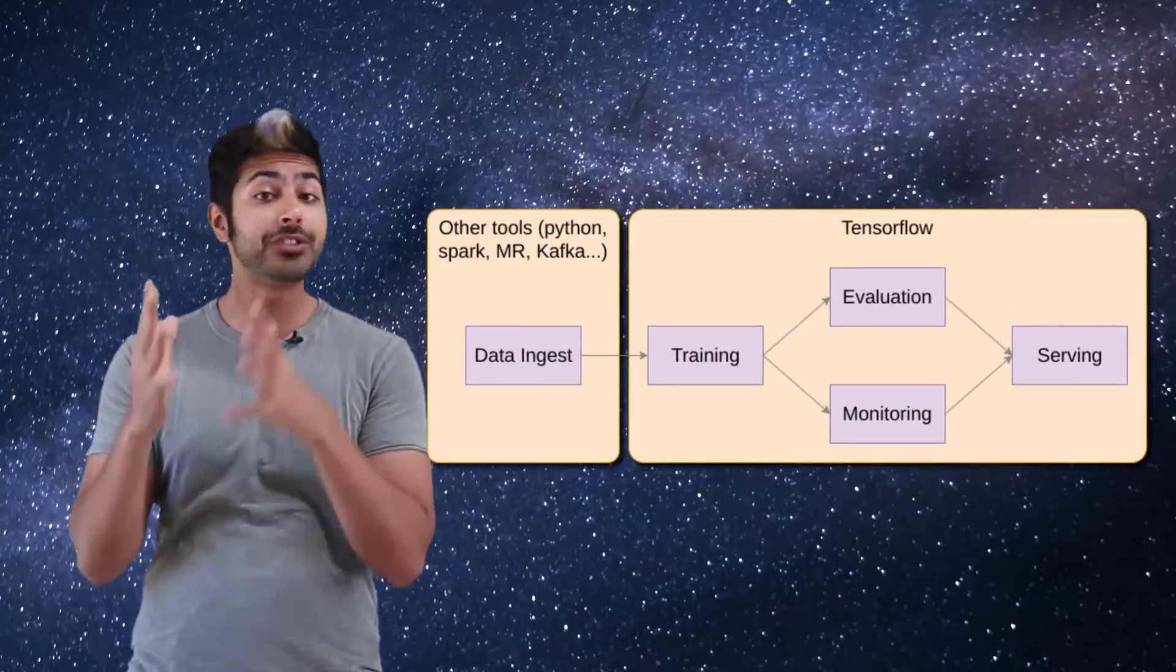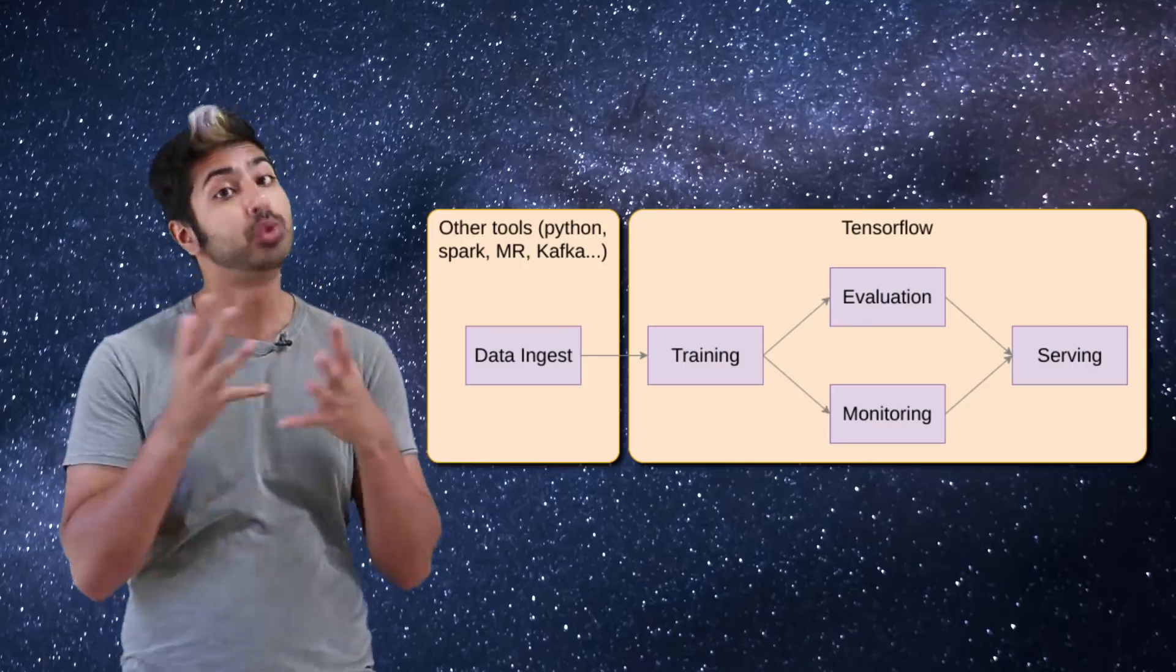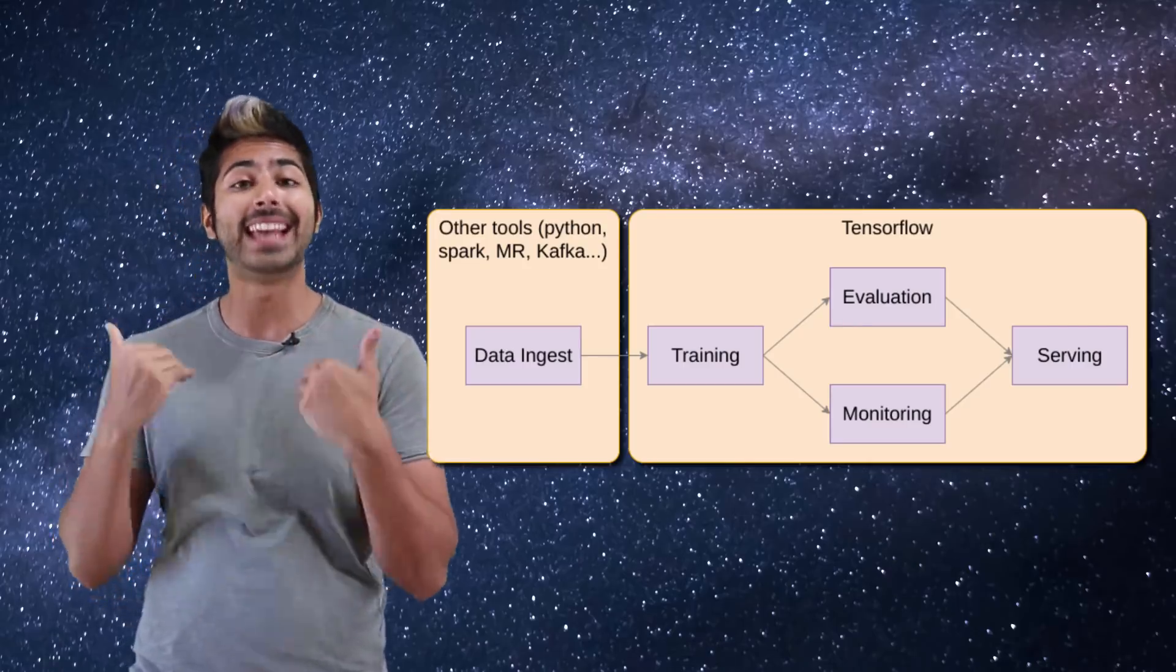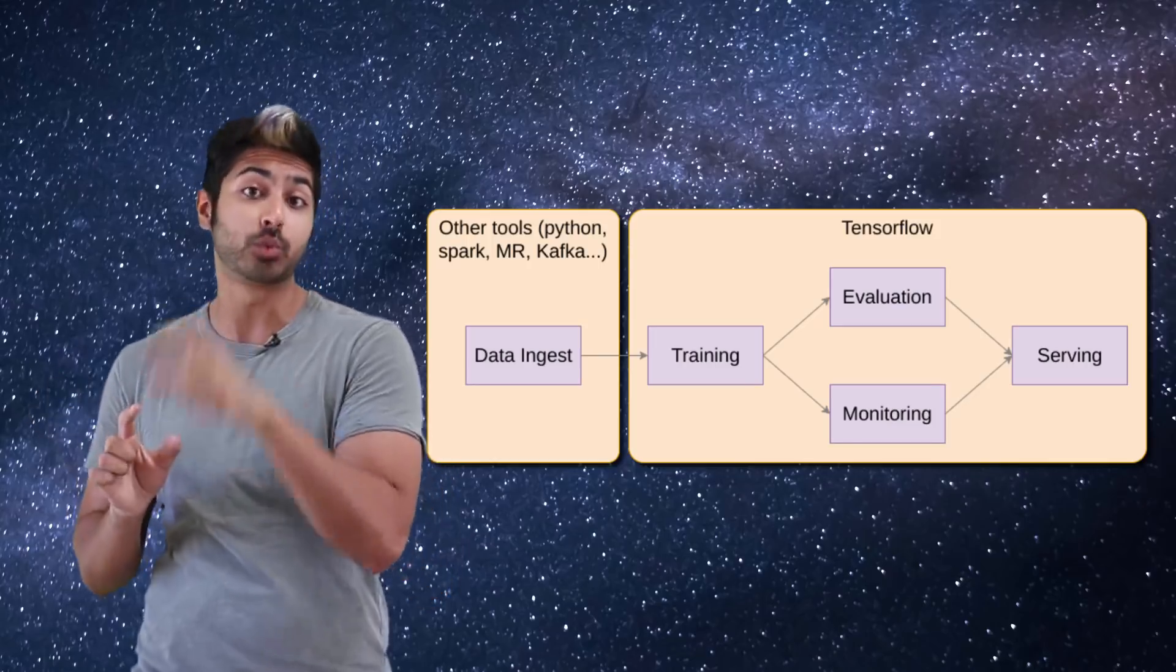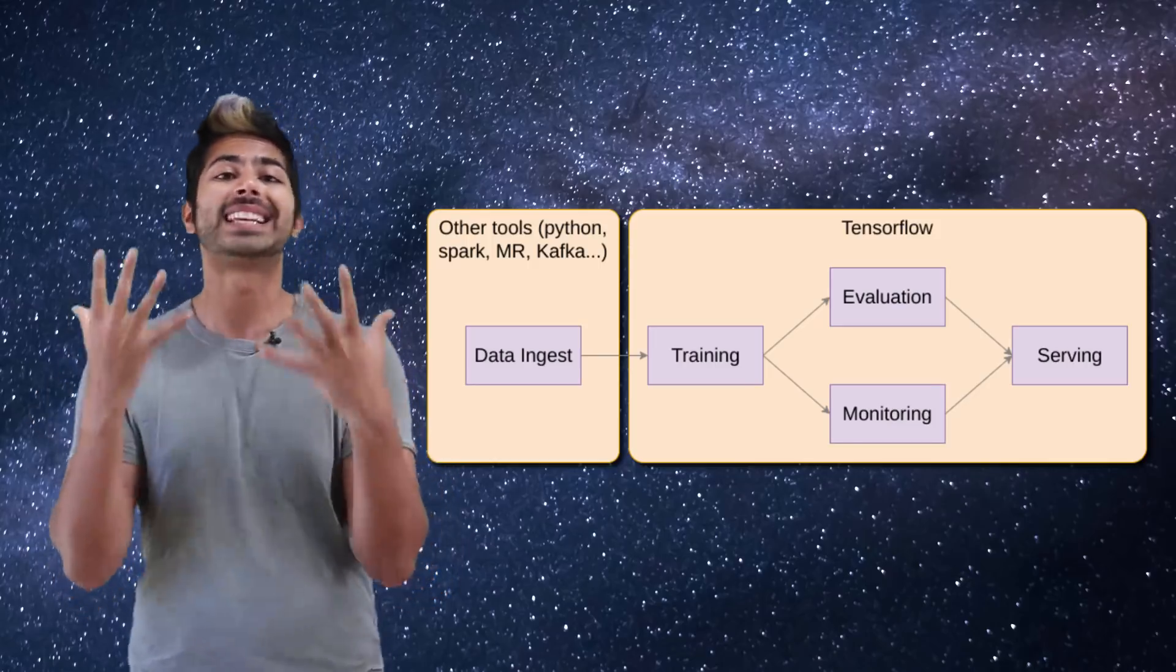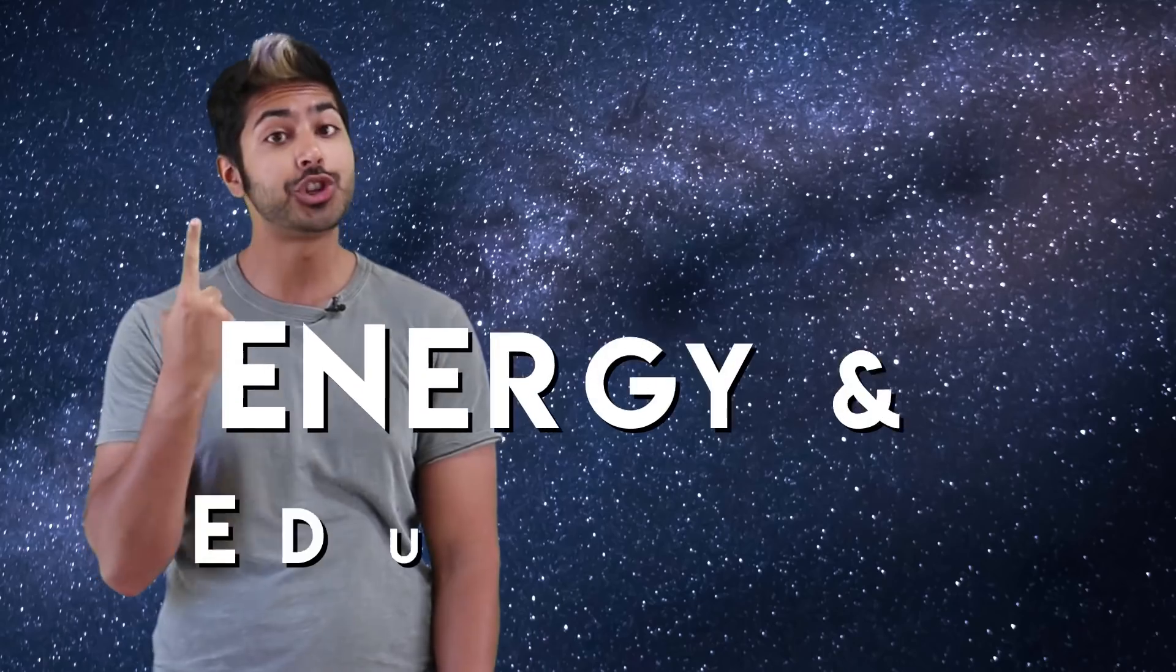Okay, so all that is to say that TensorFlow offers developers a toolset that gives us an end-to-end AI pipeline to build an AI as a service business with. But the question is what kind of business should we build? There are lots of potential industries ripe for disruption. Let's pick two that I'm particularly passionate about: energy and education.